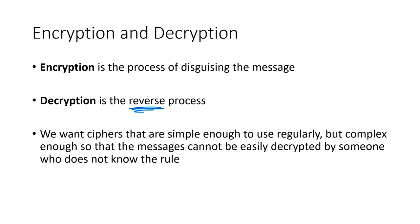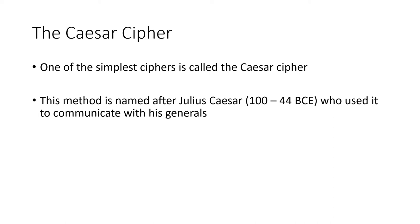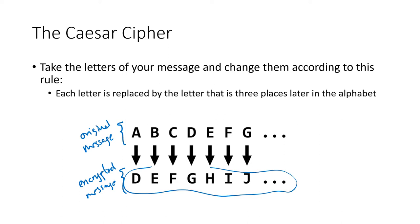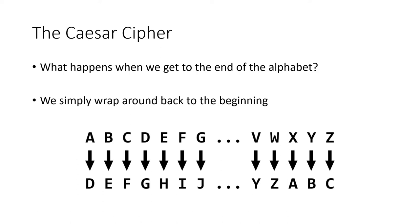One of the simplest and oldest ciphers is called the Caesar cipher, named after Roman Emperor Julius Caesar, who used it to communicate with his generals. The rule is relatively simple: take every letter of the original message and replace it with the letter three spaces further along in the alphabet — so A gets replaced by D, B by E, C by F, and so on. When we reach the end of the alphabet, we loop around to the beginning, so that every one of the 26 letters has a corresponding letter in the encrypted message.